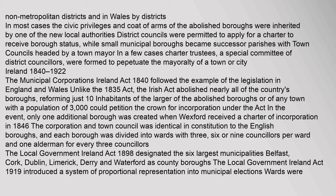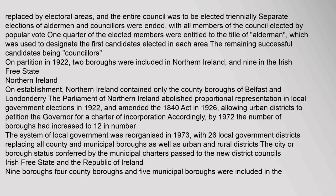The Local Government Ireland Act 1898 designated the six largest municipalities — Belfast, Cork, Dublin, Limerick, Derry and Waterford — as county boroughs. The Local Government Ireland Act 1919 introduced a system of proportional representation into municipal elections. Wards were replaced by electoral areas and the entire council was to be elected triennially; separate elections of aldermen and councillors were ended, with all members of the council elected by popular vote. One quarter of the elected members were entitled to the title of Alderman, designating the first candidates elected in each area, with the remaining successful candidates being councillors. On partition in 1922, two boroughs were included in Northern Ireland and nine in the Irish Free State.